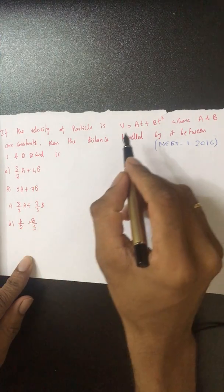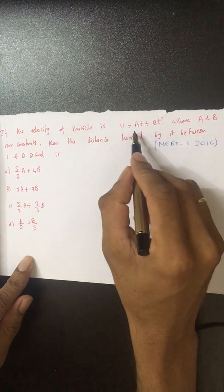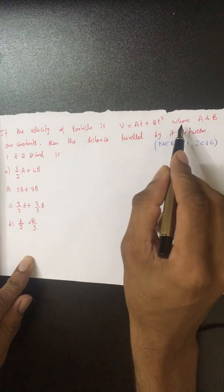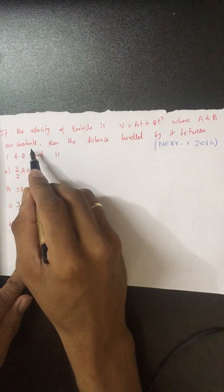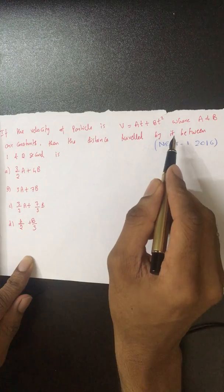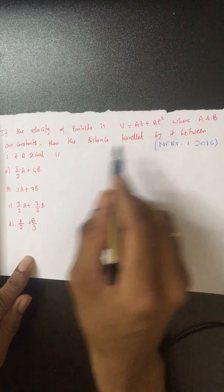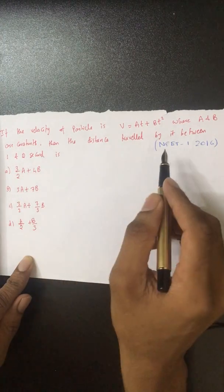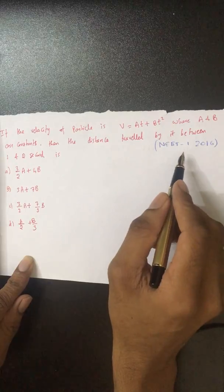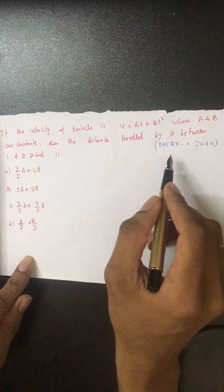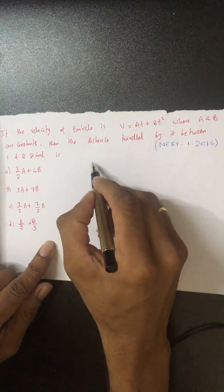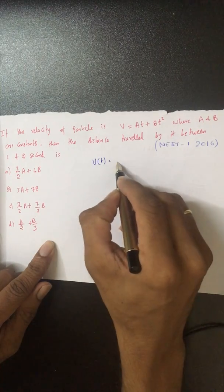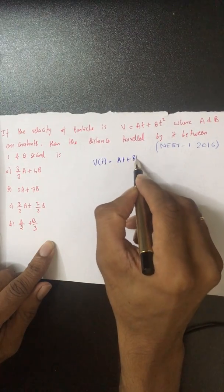If the velocity of the particle is described by v equals at plus bt squared, where a and b are constants, then the distance travelled by that particle between 1 and 2 seconds. This was our 2016 first phase. Velocity is given as a function of time, which is at plus bt squared.